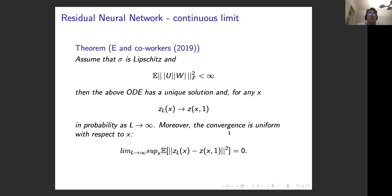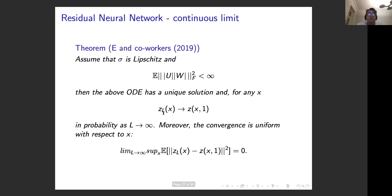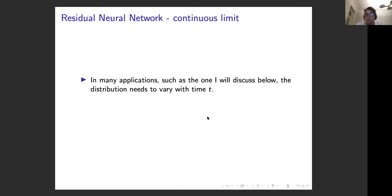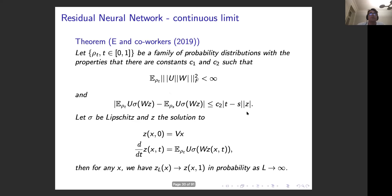A small note: in this example the distribution ρ was constant in time, but typically you want the distribution to vary in time. You can extend the previous result to this case as well. Even with a time-dependent family of distributions, under similar conditions plus a Lipschitz-like condition on the distribution, you get uniform convergence of the neural network to the ODE solution.